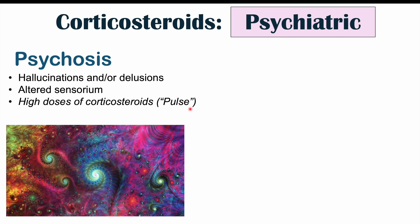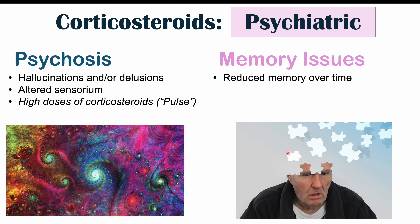We can also see memory issues with corticosteroid use. Patients taking systemic steroids for long periods of time can develop problems with short-term and long-term memory. This is likely due to hippocampal dysfunction — the hippocampus is involved in consolidating memories. Over time, the hippocampus and parts of the prefrontal cortex can become atrophied due to increased corticosteroid use. This can occur even with high levels of endogenous cortisol, meaning chronic high stress can also damage the hippocampus.